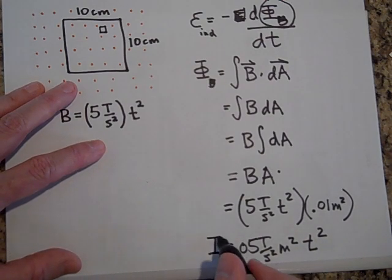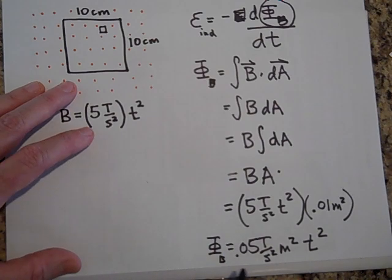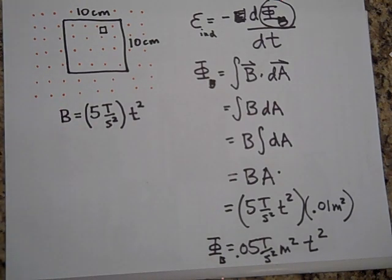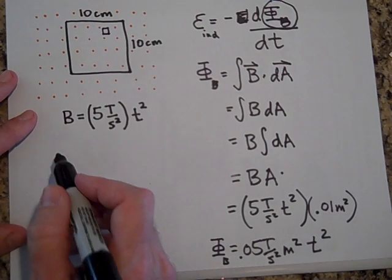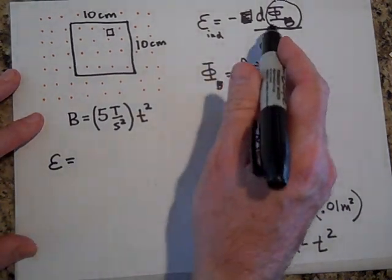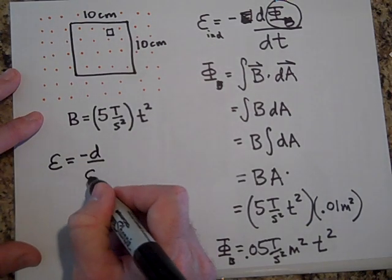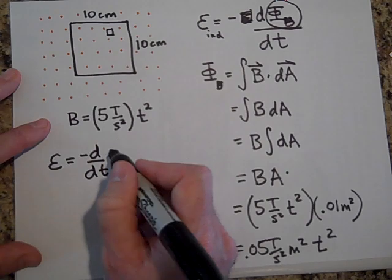That is our flux. Now, remember, I've only found the flux. I have not taken the derivative of it yet. So to get the EMF, I'm now going to take the negative derivative of the flux with respect to time. So that would be this.